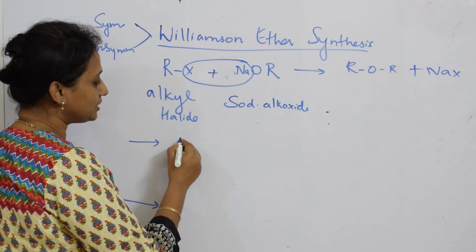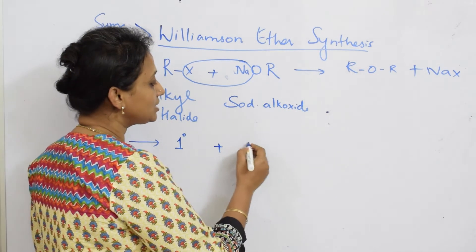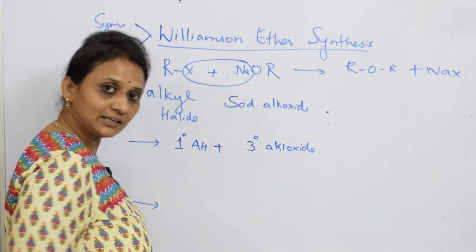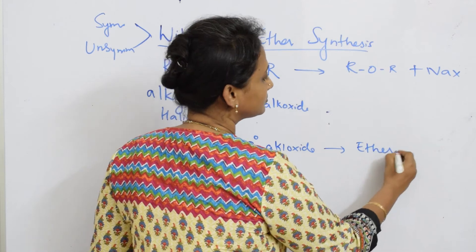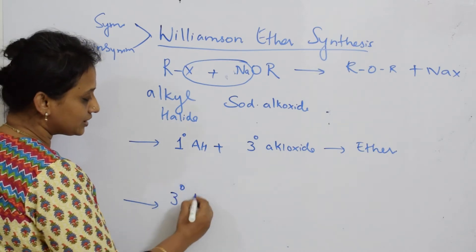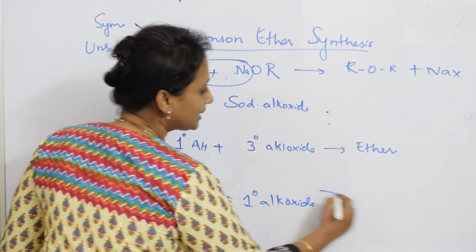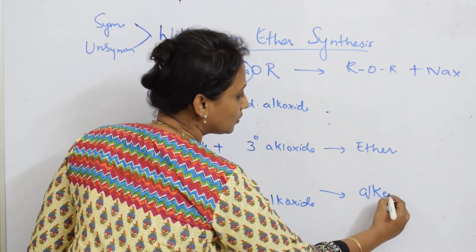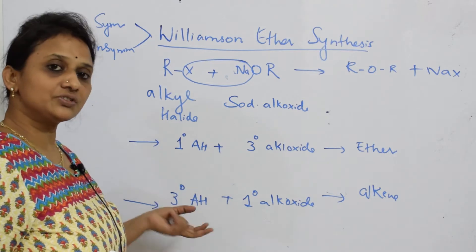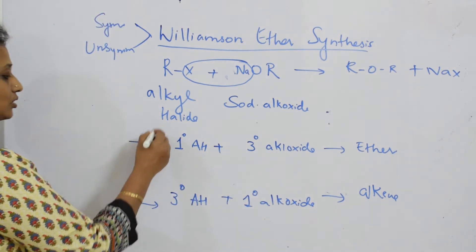If the alkyl halide is primary and it is combining with a tertiary alkoxide, the product you get is an ether. Now reverse it: if tertiary alkyl halide reacts with a primary alkoxide, you will get alkenes. In this case, elimination is preferred over substitution — elimination dominates rather than substitution, leading to alkene formation.